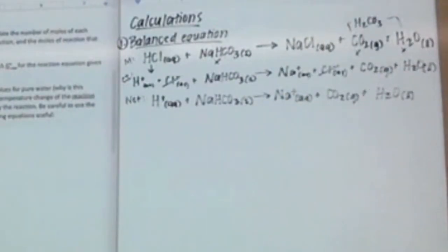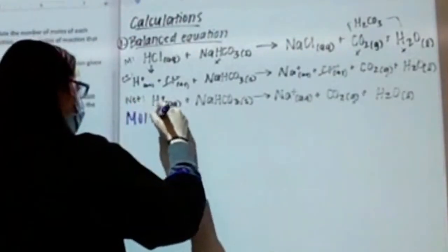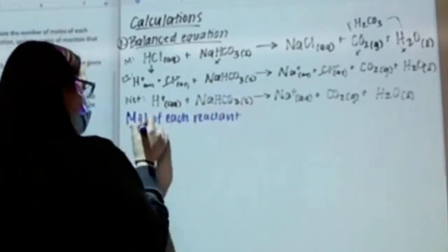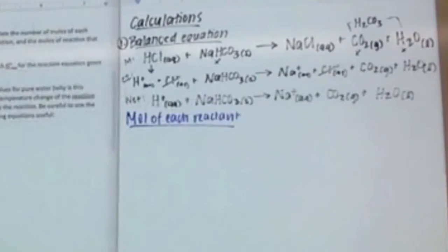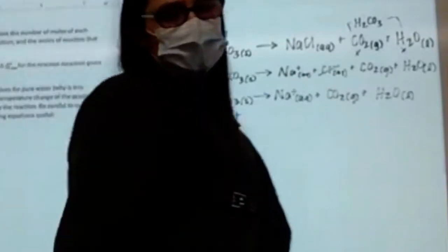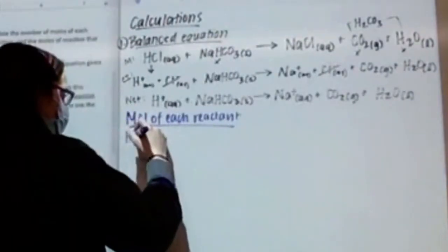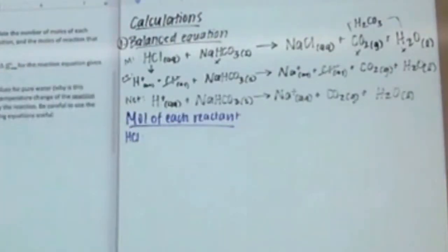The second part of number one says calculate the number of moles of each reactant initially present. So I'm going to label this part 'moles of each reactant.' Your two reactants are HCl and sodium bicarbonate.